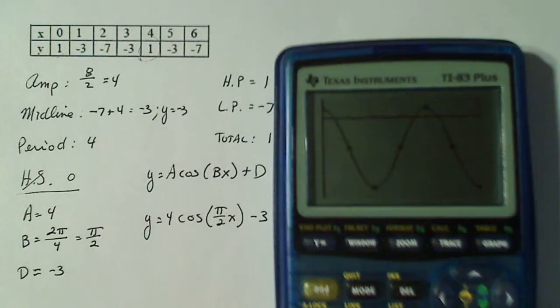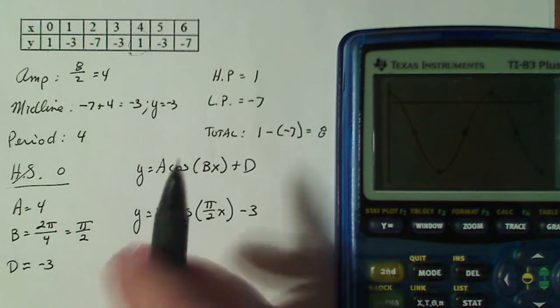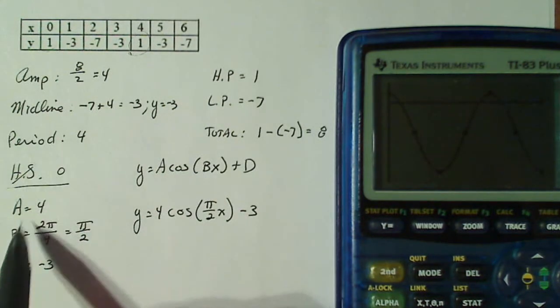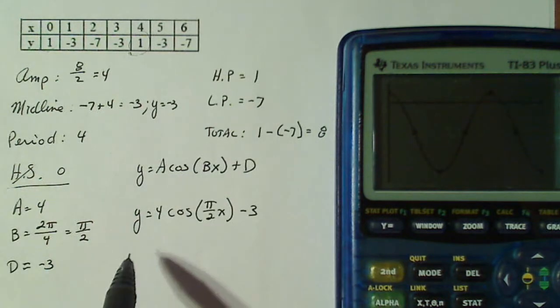So if you just structure it so you find and do the same things every time when you have a set of data - amplitude, midline, period - and then you find your a, b, and d, or c if necessary, in the same way.